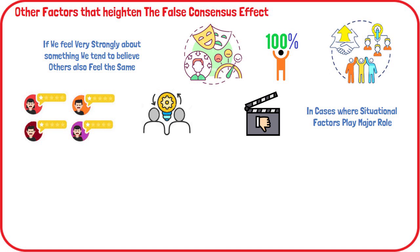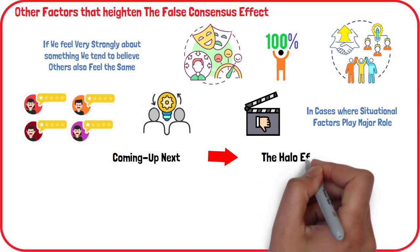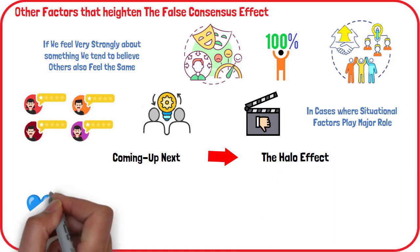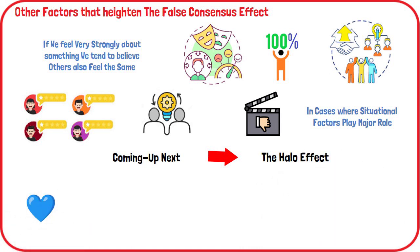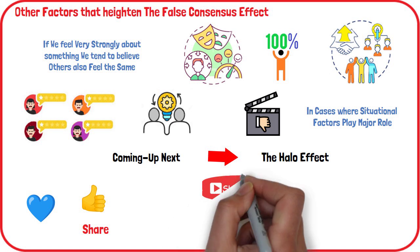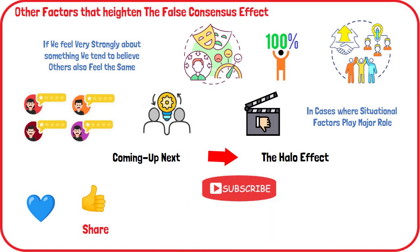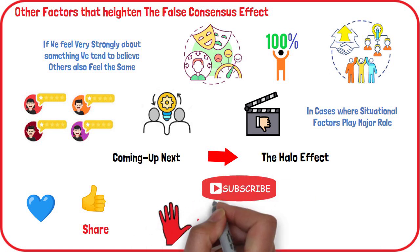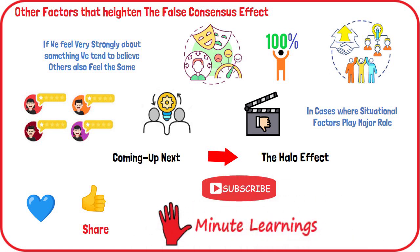That's all on the false consensus effect from my side. In the next video we shall learn about the halo effect. Hope you found this video useful. If you liked it, give me a thumbs up and subscribe to my channel, 5-Minute Learnings. And do remember to hit the bell icon to get notified of new videos. Thanks for watching.